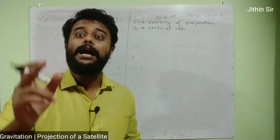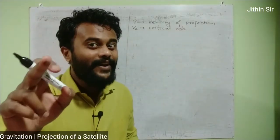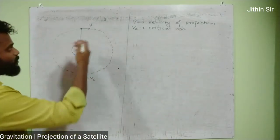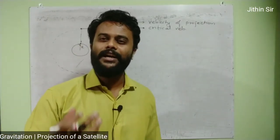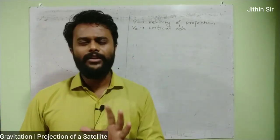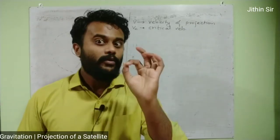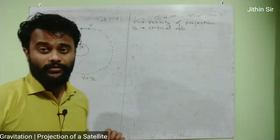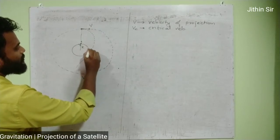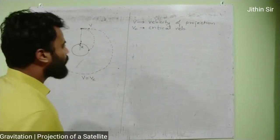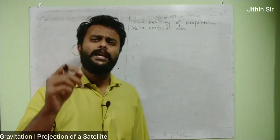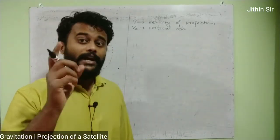The question arises: what if the velocity of projection is not equal to critical velocity? If the velocity we projected the satellite with is less than critical velocity, then logically, since the speed is not appropriate, it will not maintain circular motion. It will perform an elliptical motion and fall back towards earth, which will cause massive destruction. This happens when the velocity of projection is less than critical velocity — it performs an elliptical orbit and comes back to earth.